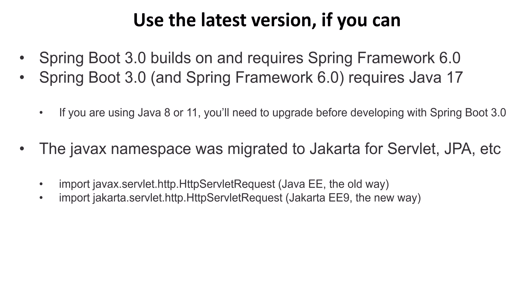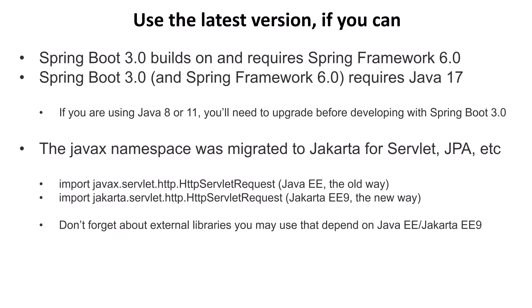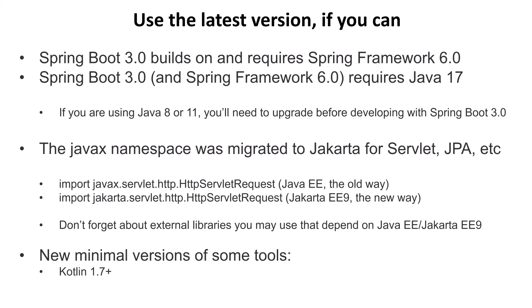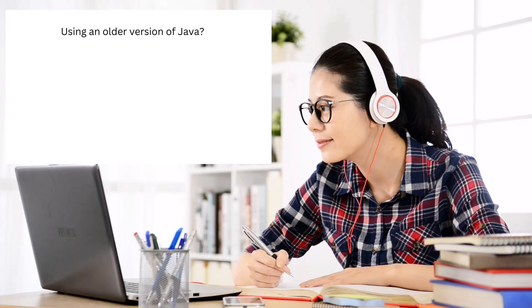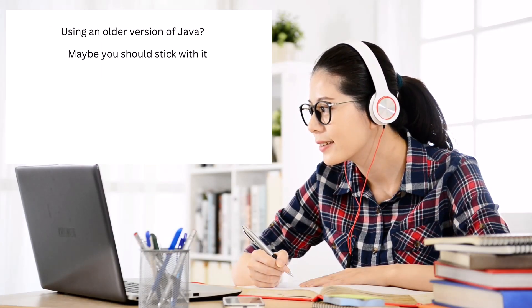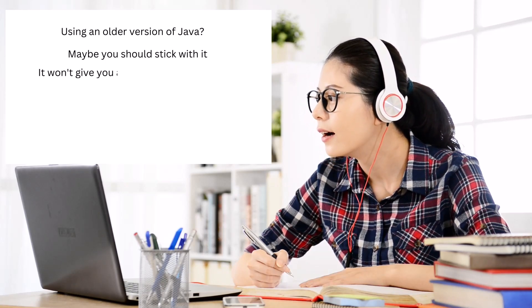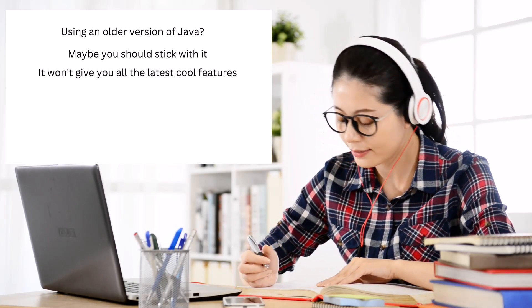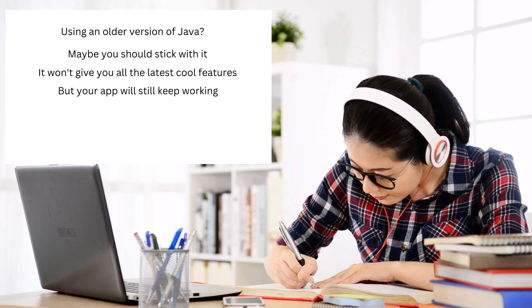You might think this won't impact you, and you might be right, but don't forget about any external libraries your existing applications may use or depend on, and whether the changes will impact them. Other tools will require upgrades to their versions, including Kotlin, Gradle, and others. Keep in mind, if you're using an older version of Spring and it works, you might want to just stick with it. The older version may not give you access to all the latest bells and whistles, but it will keep your project functioning. Migration to a new version is certainly possible, but it requires careful planning.